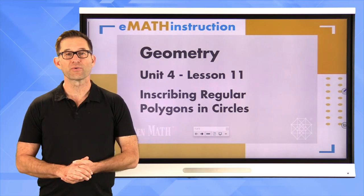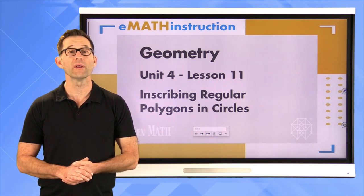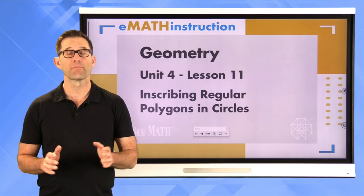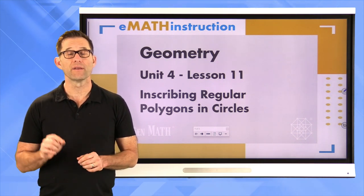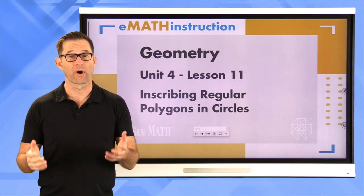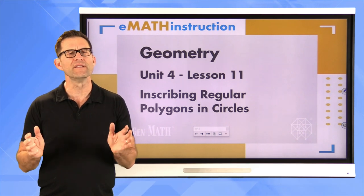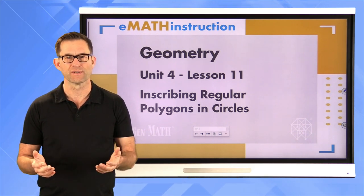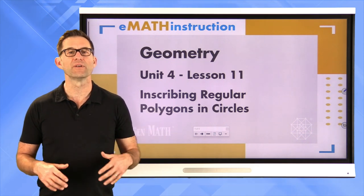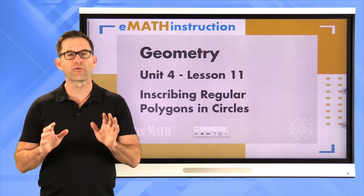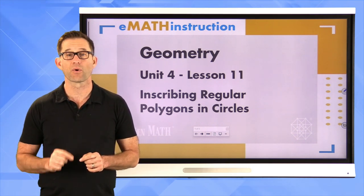Hello and welcome to another geometry lesson by eMath Instruction. My name is Kirk Weiler, and today we'll be doing Unit 4 Lesson 11 on inscribing regular polygons and circles. This is our final lesson on Unit 4, which has been all about constructions. We'll look at three specific types of regular polygons that we can inscribe in a circle.